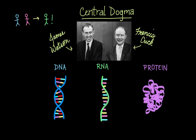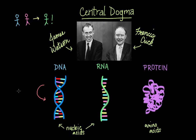We have three major players here. DNA and RNA are nucleic acids, which are made up of nucleotides. And proteins are made up of amino acids. The information starts at the most basic level stored as DNA, which can then be restored as DNA when DNA copies itself in a process called replication. Then DNA can be copied into RNA in a process called transcription. And then finally, you can use the information in RNA to synthesize a protein in a process called translation.